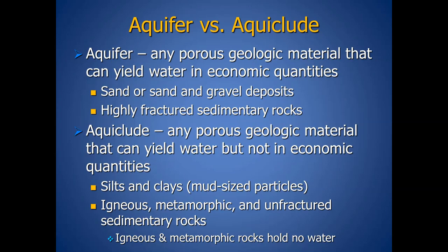Good aquifers are usually composed of sand or sand and gravel — coarser materials create more pore spaces, which means they can hold more water. Or they may be highly fractured sedimentary rocks. Chicago, Illinois sits on top of a highly productive fractured limestone aquifer, where water is stored in the breaks and fractures.